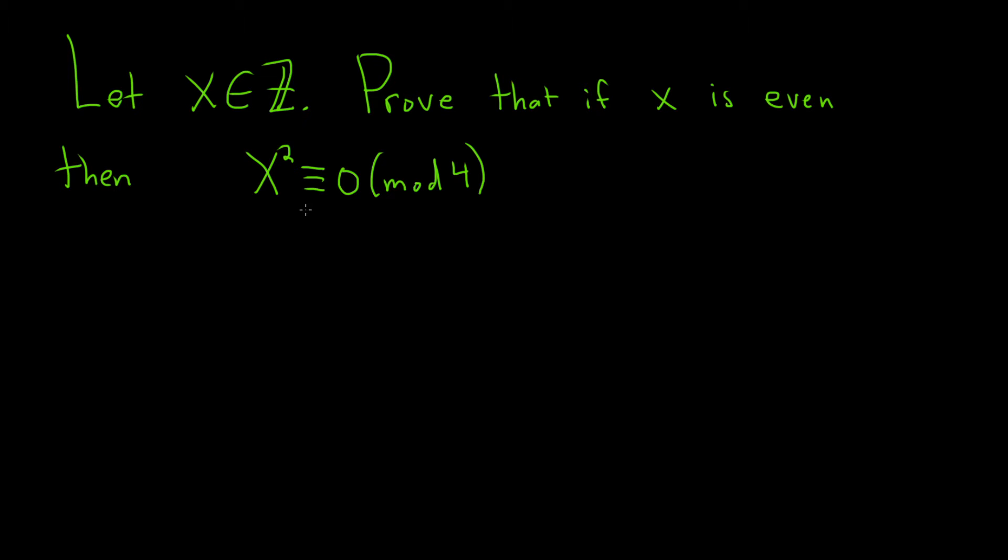Let x be an integer. In this problem we're going to prove that if x is even, then x squared is congruent to 0 modulo 4.